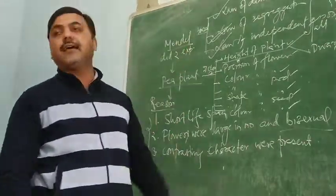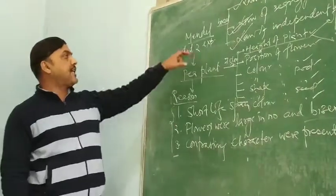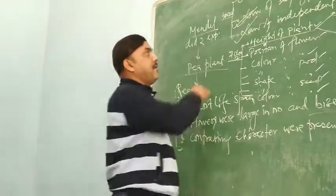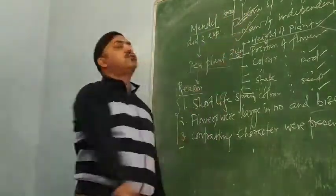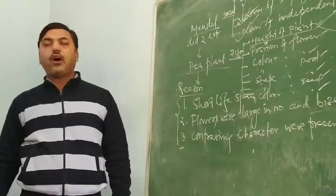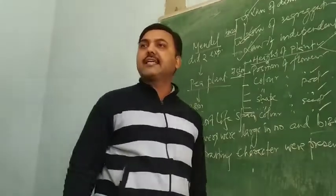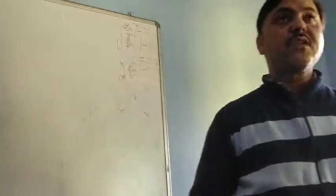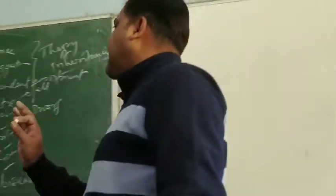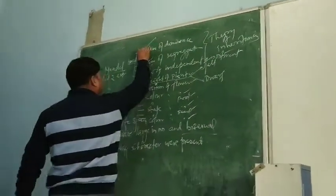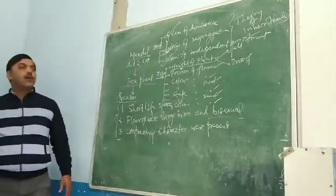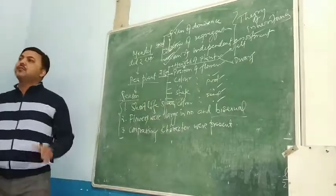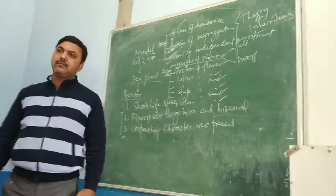Now, if we have to understand what these laws are, we will first understand the experiments. These two laws — the Law of Dominance and the Law of Segregation — are based on the first experiment. The Law of Independent Assortment, the third law, is based on the second experiment — specifically the third experiment in the three laws.